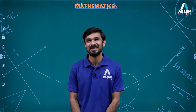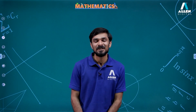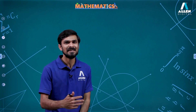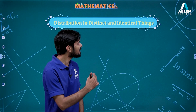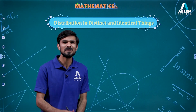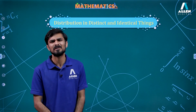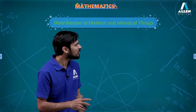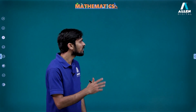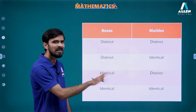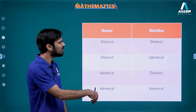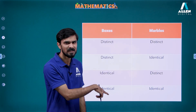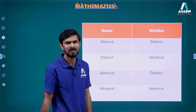Hello everyone, welcome to Allendigital. Today let's take a topic from permutations and combinations and see how to distribute distinct and identical things, because I've seen most of the students being confused about this. I'm going to take a generalized case of boxes and marbles and we'll take the different possibilities of them being distinct or identical. Let's take these cases one by one and understand this properly.